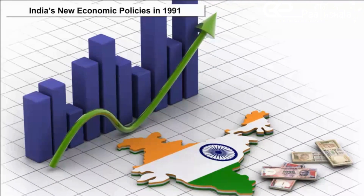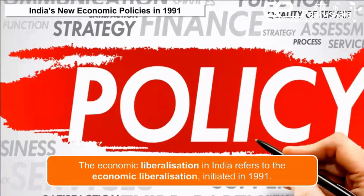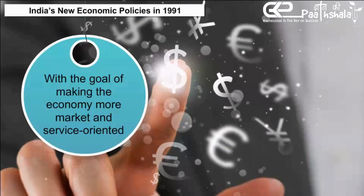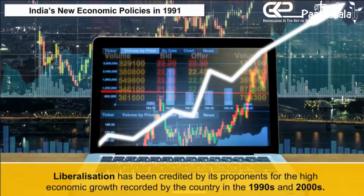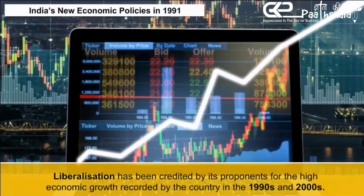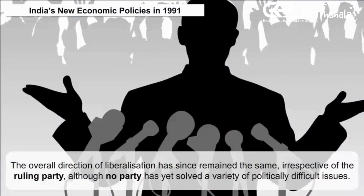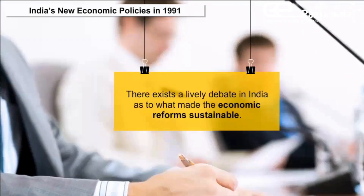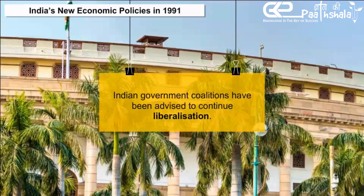India's New Economic Policy in 1991. The economic liberalization in India was initiated in 1991 with the goal of making the economy more market- and service-oriented and expanding the role of private and foreign investment. Liberalization has been credited by its proponents for the high economic growth recorded by the country in the 1990s and 2000s. The overall direction of liberalization has since remained the same, irrespective of the ruling party, and Indian government coalitions have been advised to continue liberalization.